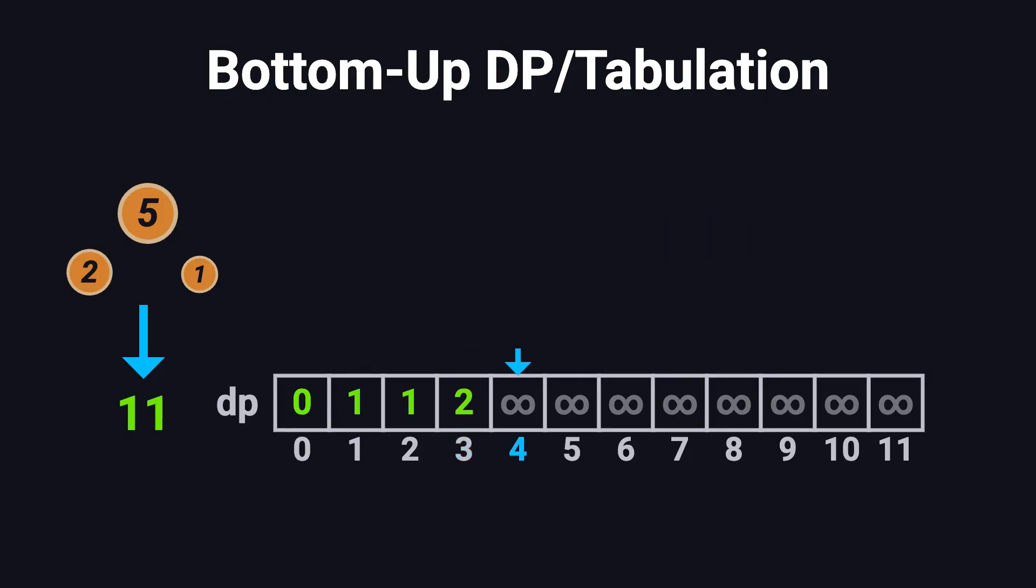What about dp[4]? Let's list out the options. We could use 2 two coins, or 1 two and 2 ones, or 4 ones. 2 twos is the best, so dp[4] is 2. You can probably see where this is going. At first, listing out all combinations might work. But as the target amount gets bigger, the number of possibilities explodes. We need something smarter.